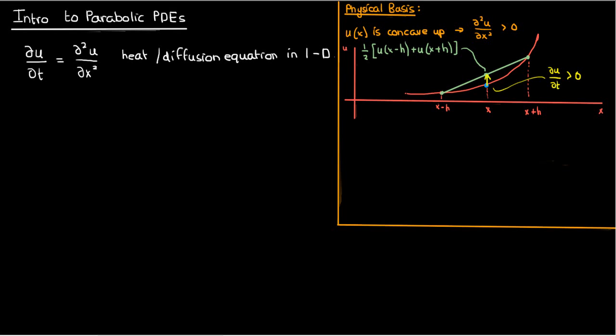We could apply the same argument to any other phenomenon described by this equation. So for instance in diffusion, if the concentration of u at x is low relative to the average surrounding concentration, then material will tend to diffuse towards x.